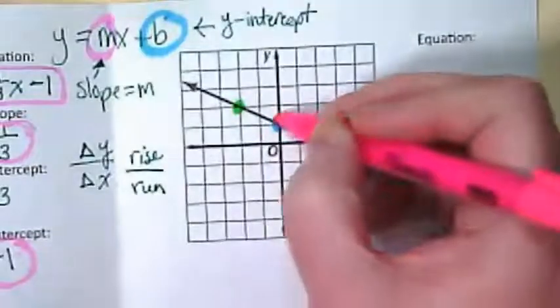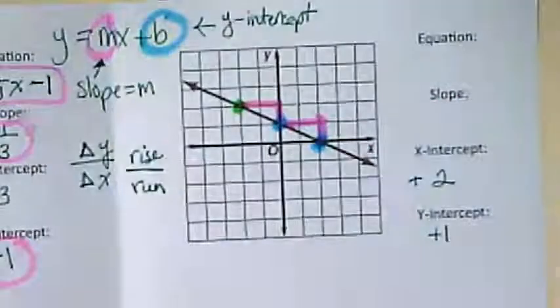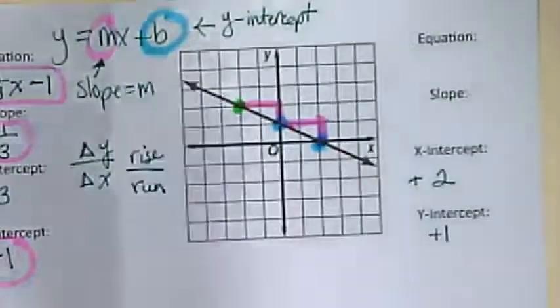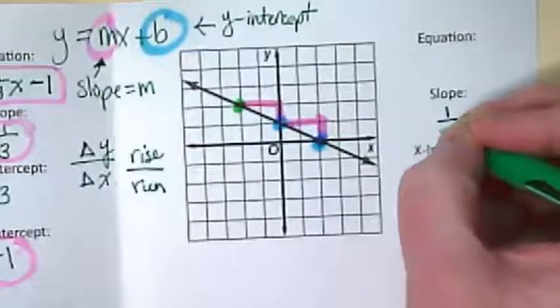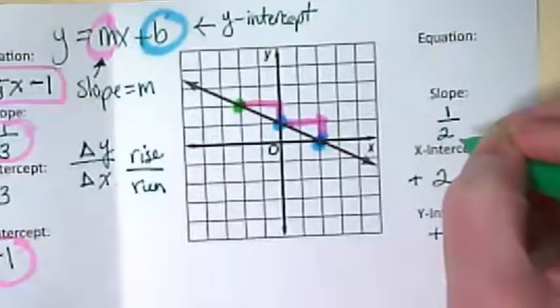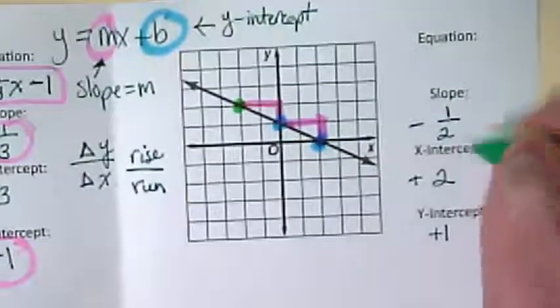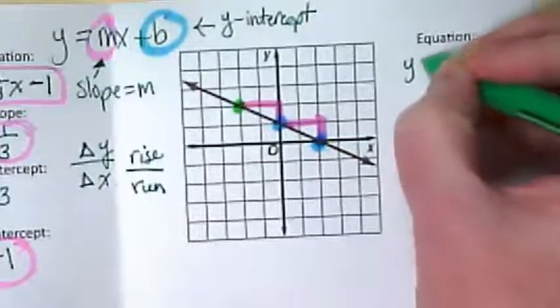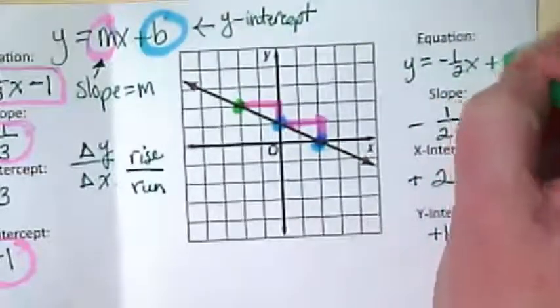So I've got this point and this point. I found this point as well. How much are we rising up here and how much are we running across? And what kind of line is it? So our equation is y equals negative one half x plus one.